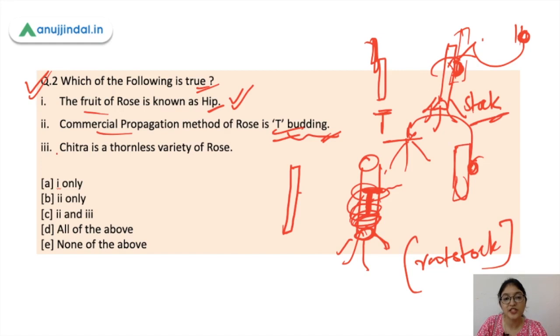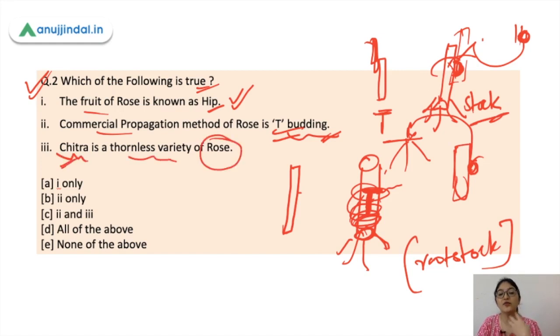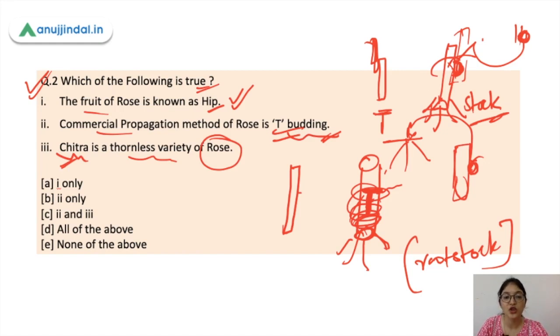The third statement is: Chitra is a thornless variety of rose. Chitra is a hybrid variety of rose which is thornless. So all of these statements are correct and the correct option would be D.